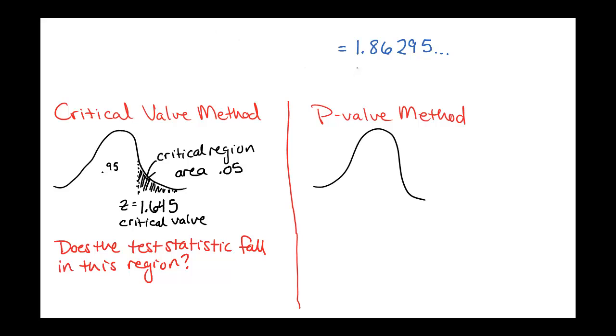So in this case, our test statistic was 1.8 about. This is larger than 1.645. So in this case, we would say yes, it does fall in the critical region. If it does fall in the critical region, the way we want to think about that is that the probability of this occurring is small. It's in the tail here. So in this case, we would reject H0, our null hypothesis.